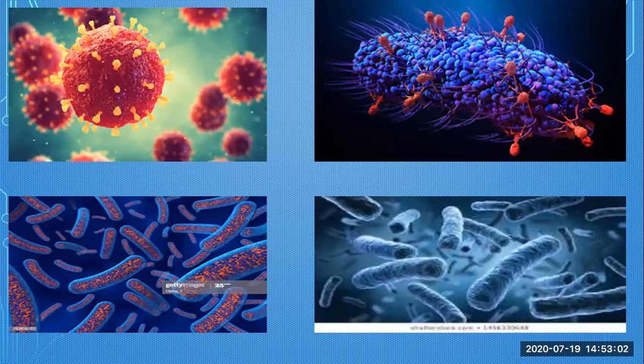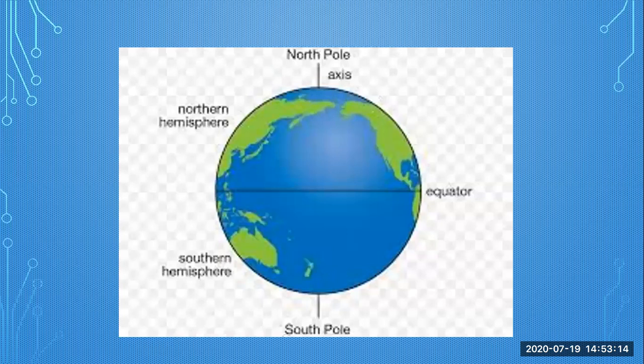Amazingly, bacteria that live south of the equator build the same single domain magnets as their counterparts that live north of the equator, but they align them in the opposite direction to coincide with the opposite magnetic field in the southern hemisphere.